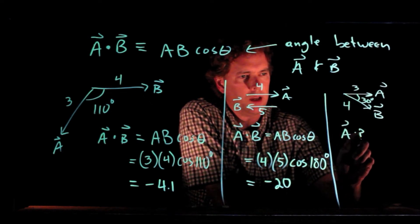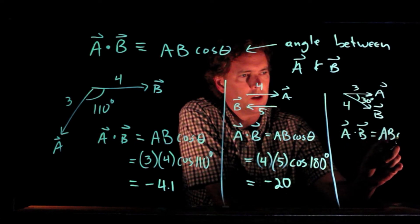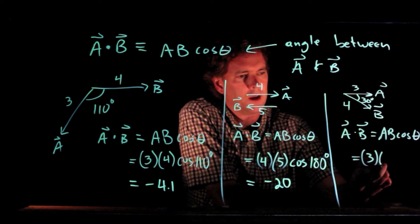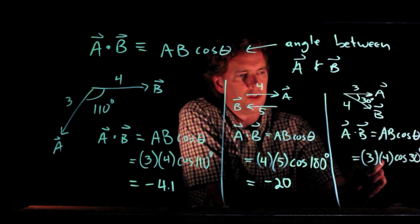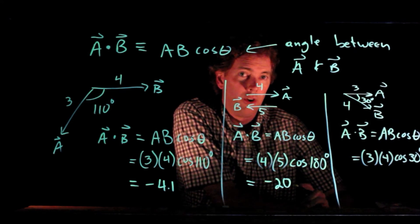A dot B is equal to AB cosine of theta. And so we get 3 times 4 times the cosine of 30 degrees.